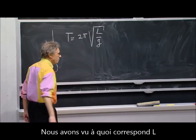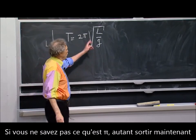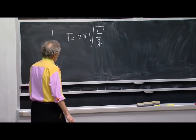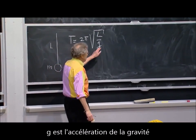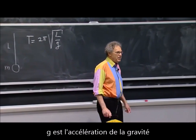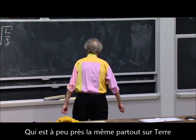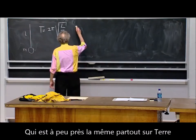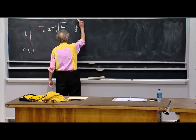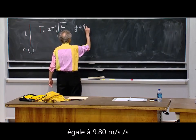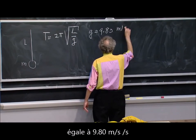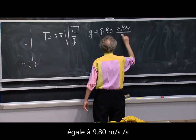You already know what L is. And G is what we call the gravitational acceleration, which is approximately the same everywhere on Earth, but it is very close in Boston to 9.80 meters per second per second.